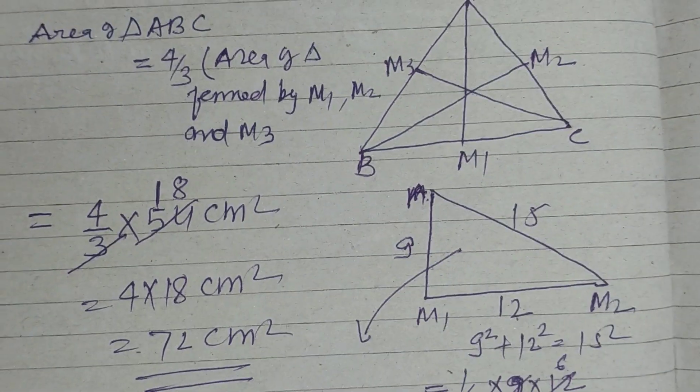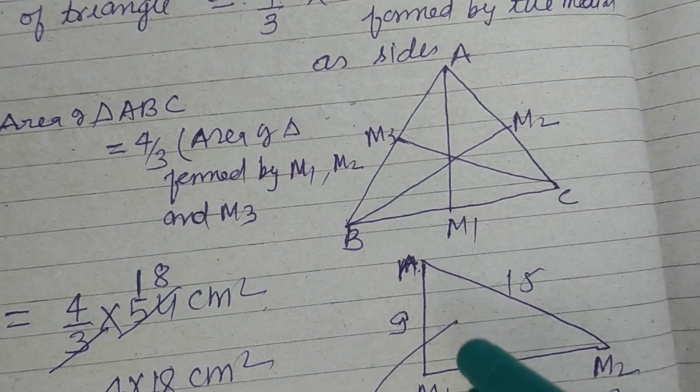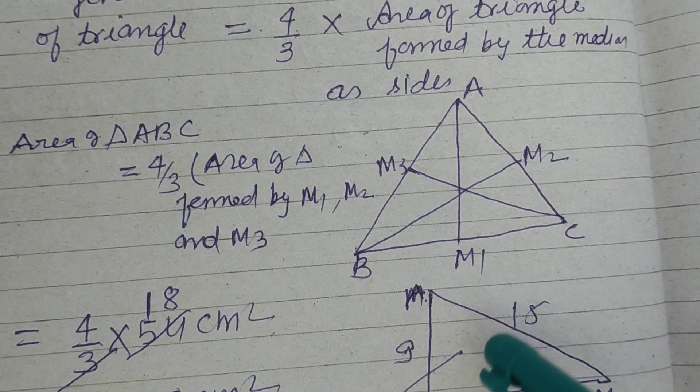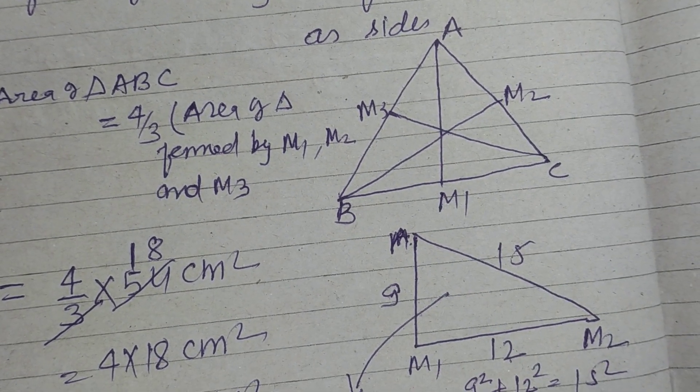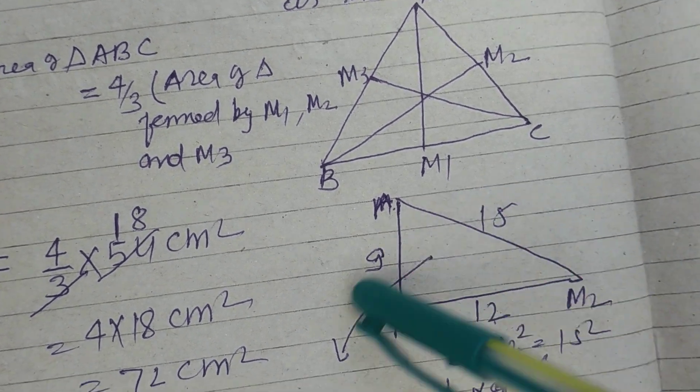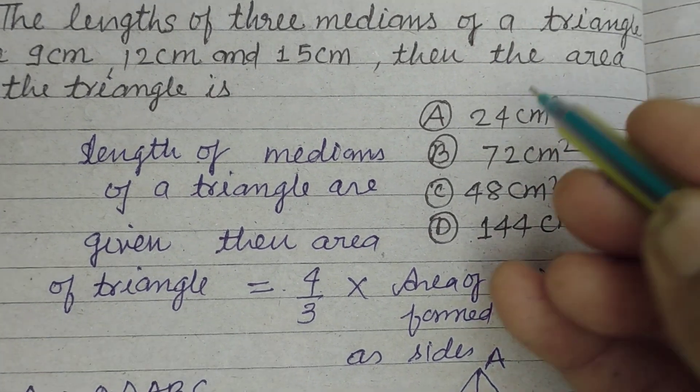So we learn that when median of a triangle is given, the area of the triangle will be 4 by 3 area of the triangle formed by this median. So student answer of this question is B.